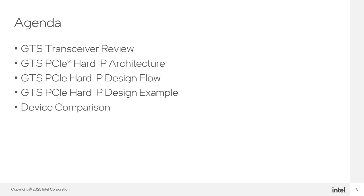The agenda for this training begins with a review of the GTS transceiver architecture. Then we will look at the GTS PCIe Hard IP in more detail to understand the architecture and the PCIe features. Next, we investigate the design flow when targeting the PCIe Hard IP, including customizing the Hard IP for your platform and understanding its connections to your application logic. Before we end, we will look at a design example you can generate as a hardware reference, and for those porting designs from Cyclone 5 devices, we will end with a comparison of PCIe features between Agilex X5 and Cyclone 5 FPGAs.